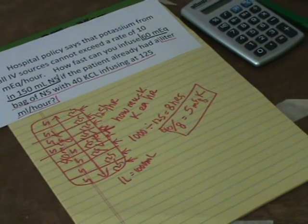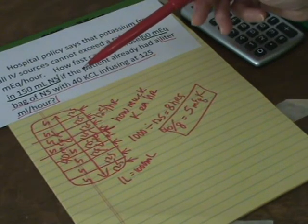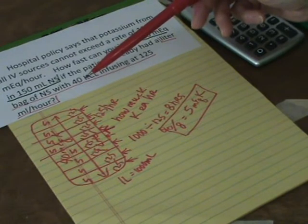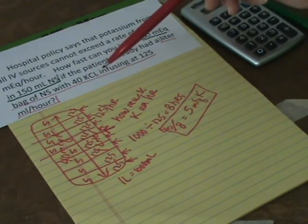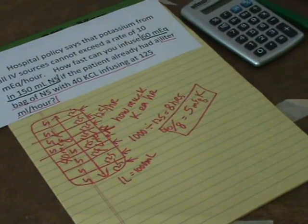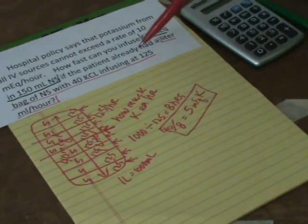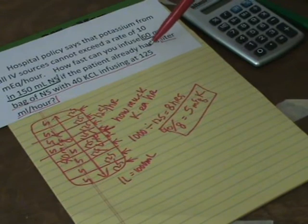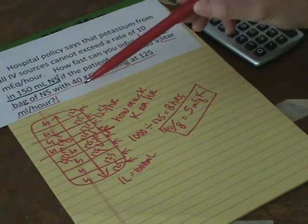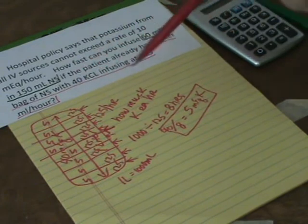Well, I mean, you can do it a couple different ways. I suppose you could take 1000 and divide it into 40 to find out how much potassium is in every mil and then multiply that by 125 mils. That would work. Or you can look at the total bag and say this bag will infuse in 8 hours. So this will infuse in 8 hours. So it's 5 every hour.